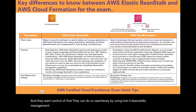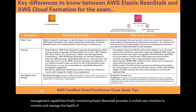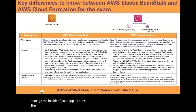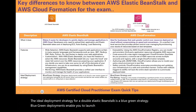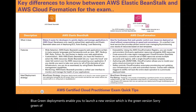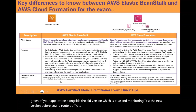Finally, monitoring. Elastic Beanstalk provides a unified user interface to monitor and manage the health of your applications. The ideal deployment strategy for AWS Elastic Beanstalk is a blue-green strategy. Blue-green deployments enable you to launch a new version — the green version — of your application alongside the old version, which is blue, and monitor and test the new version before you reroute traffic to it, rolling back on issue detection.